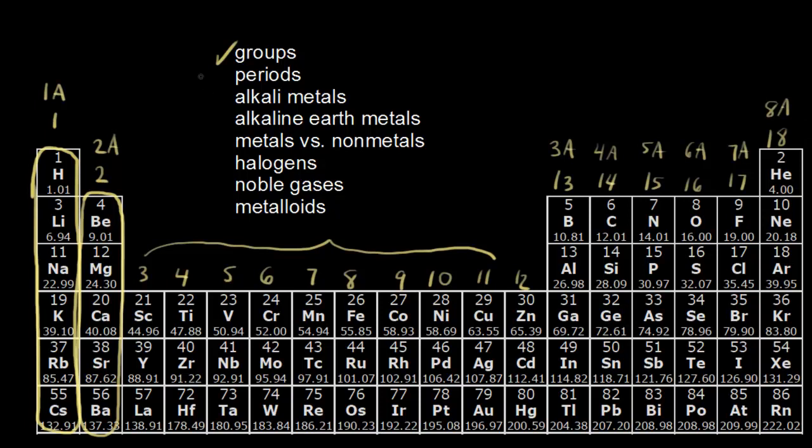And so let's move on to the concept of periods. So a period is a horizontal row on the periodic table. And so if I look at period one and I just move across my periodic table, hydrogen is in the first period and so is helium. I move on to the second period, so lithium, beryllium, boron,